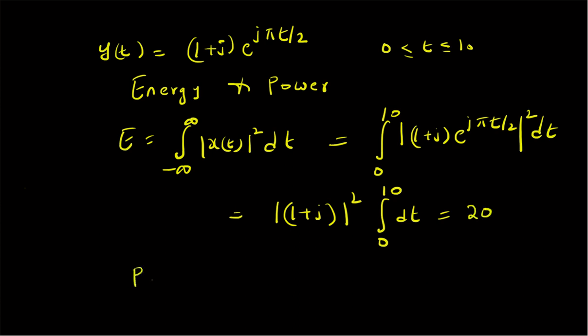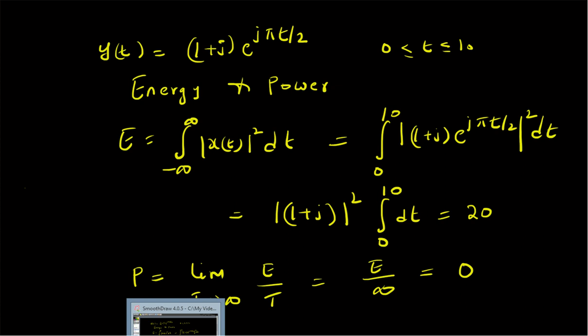Similarly, power P = limit as T→∞ of E/T. Since E is a constant equal to twenty, twenty divided by infinity equals zero. So the power is zero. The signal is a finite energy signal, and the power itself is equal to zero.